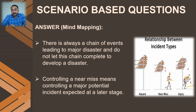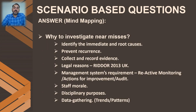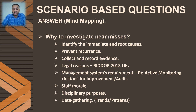This is how you develop the beginning of your answer, clearly showing the examiner why it is important to identify, report, and investigate. Now for mind mapping the body: the first reason to investigate near misses is to identify the immediate and root causes — we need to know why it happened, what were the direct causes, and what are the underlying management-related root causes.